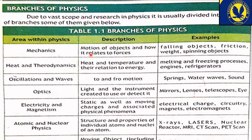یہ جاننا آپ کے لیے اہم ہے کیونکہ metric اور FSc کے بعد جب آپ اپنے career کا انتخاب کریں گے — کون سی engineering میں جانا ہے، یا MSc یا PhD کے لیے کون سی branch of physics میں specialize کرنا ہے — اس وقت آپ کو اچھی طرح معلوم ہونا چاہیے کہ میں کس چیز میں interested ہوں۔